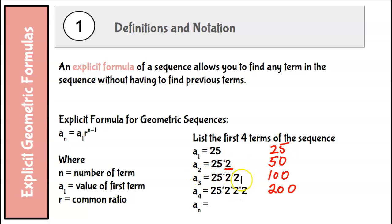And then I multiply by another 2 to get the third term. I have two 2s, a total of two 2s. That's one less than the term number. And then I multiply by another term, that's one less than the term number.